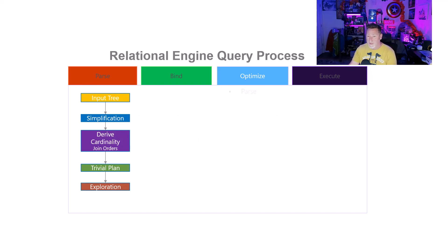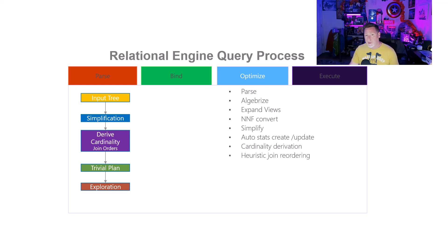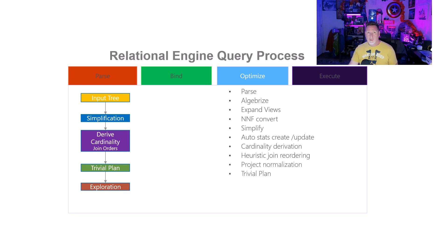Under the covers it actually gets even more complex. We're parsing, algebraizing, expanding views, doing NNF convert, simplification, auto stats create and update. Remember, if you ever have a statistic that's automatically created because you did something to a column, this is when it happens. Then cardinality derivation, heuristic join reordering — heuristics is just a fancy word for guessing with an algorithm, but it basically says: let me see if I can find the best joins. Then project normalization, trivial plan, exploration, copy out, and then we convert to an executable tree.